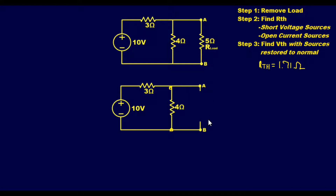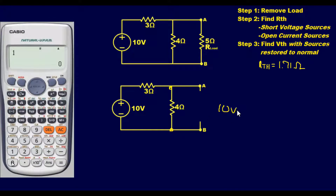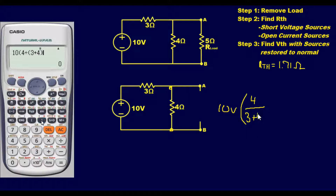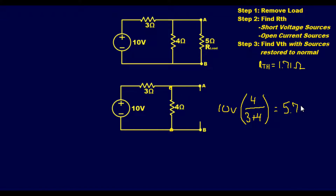Using the voltage divider rule, we take our 10 volt source and multiply by 4 ohms over (3 ohms plus 4 ohms). Plugging this into the calculator gives us a value of 5.71 volts.